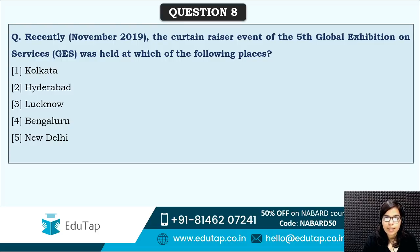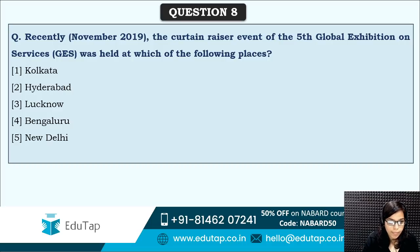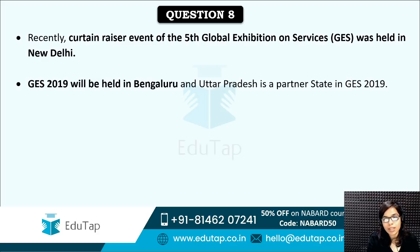Next: the curtain raiser event of the 5th Global Exhibition on Services was held at which place? Do not be confused: here the venue of the curtain raiser event is asked, not the main exhibition. The curtain raiser event was held in New Delhi. The main 5th Global Exhibition on Services is going to be held in Bengaluru, and Uttar Pradesh is the partner state — remember both the venue and the partner state.